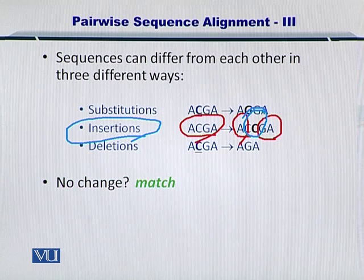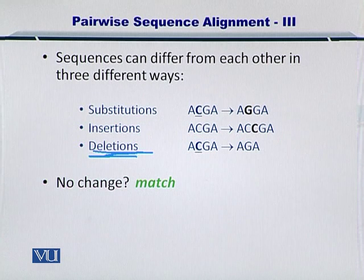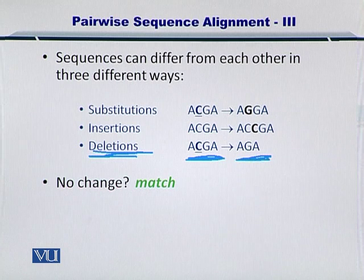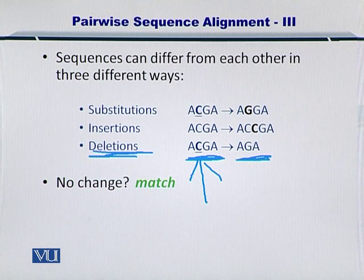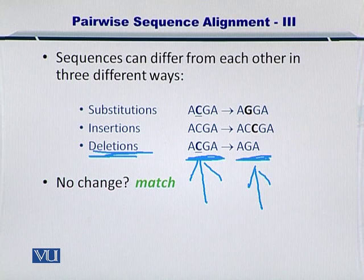Now let's take a look at deletions. In the case of deletions, if you have a sequence ACGA and you're comparing it with another sequence AGA, you can clearly see that the C — cytosine — has been deleted from this sequence. So there are these three sources of variations that can be there in biological sequences.